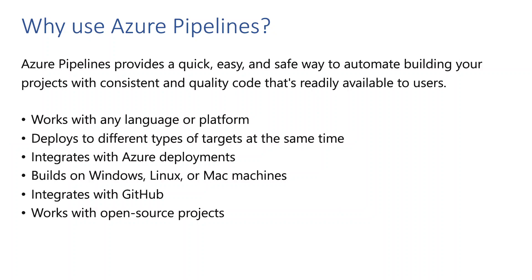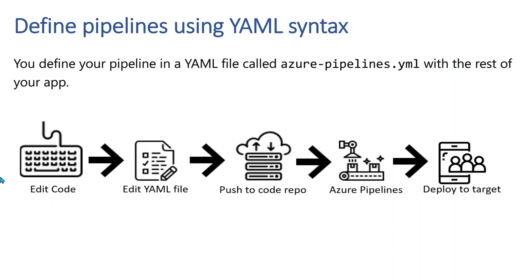Finally, why use Azure Pipelines? Azure Pipelines provides a quick, easy, and safe way to automate building your projects with consistent code quality that is readily available to users. The key benefits are: it works with any language or platform, it deploys to different types of targets at the same time, it integrates with Azure deployments, you can build on Windows, Linux, or Mac machines, it integrates with GitHub version control, and it works with open source projects too.